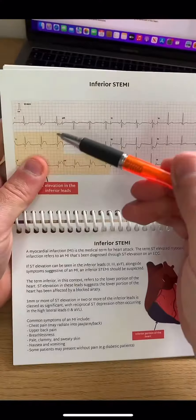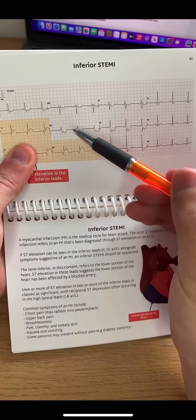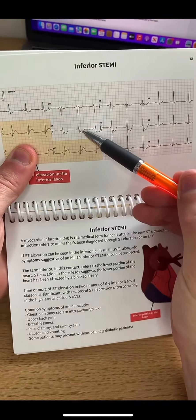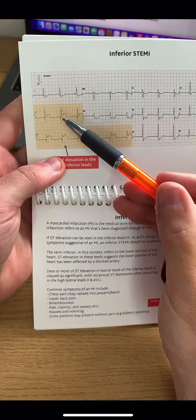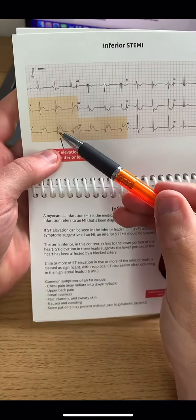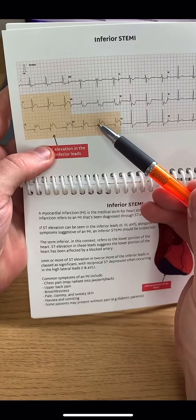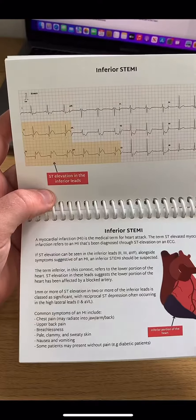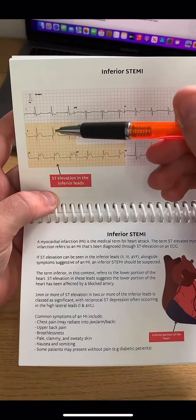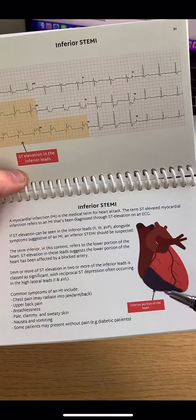A reciprocal change is defined as ST segment depression on an ECG that also has ST elevation in two or more contiguous leads. Contiguous leads just means a group of leads that face the same part of the heart.